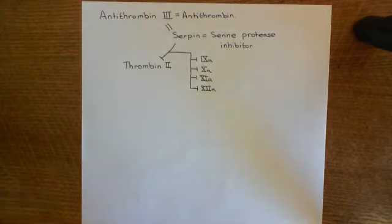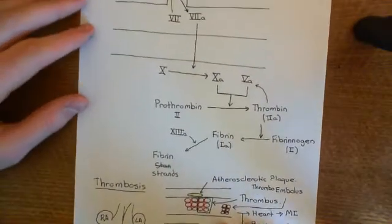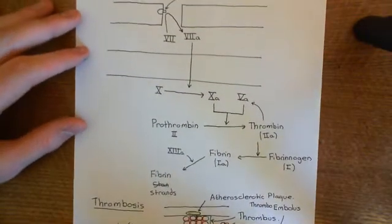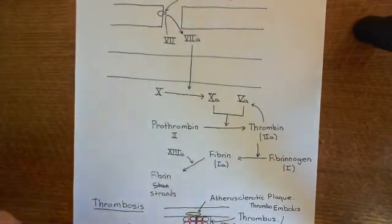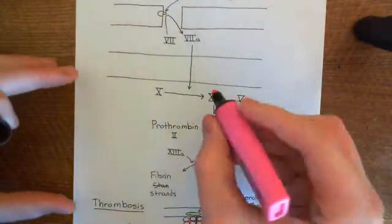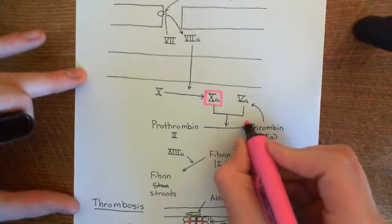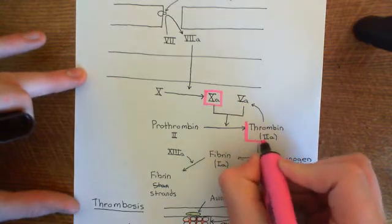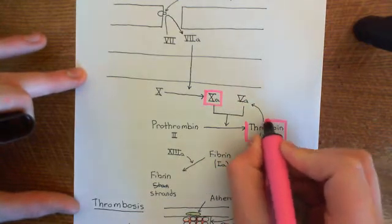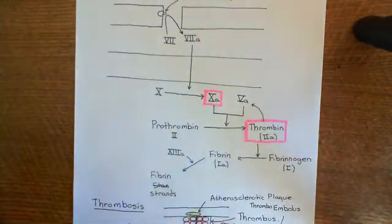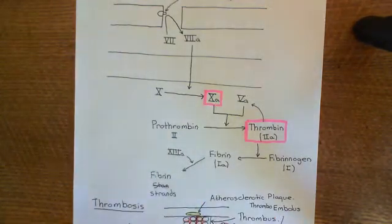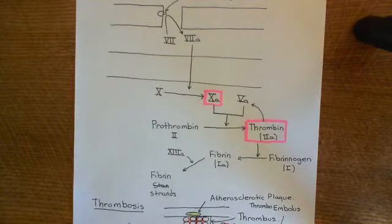Looking at the extrinsic pathway, two factors are inhibited. Antithrombin-III inhibits factor 10A and also inhibits thrombin — both crucial steps at the end of the pathway. If you inhibit thrombin, you stop the conversion of fibrinogen into fibrin. If you inhibit factor 10A, you stop the activation of thrombin in the first place.